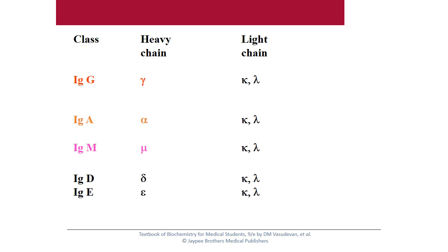The classes of immunoglobulins based on structure are IgG, IgA, IgM, IgD, and IgE. IgG contains the heavy chain gamma; IgA contains alpha; IgM contains mu; IgD contains delta; and IgE contains the epsilon heavy chain. The light chain is common to all — that is, the kappa and lambda variety.